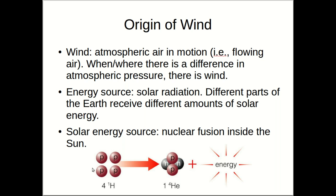You may then ask where solar energy actually comes from. The Sun is also an energy conversion system, which converts nuclear energy into solar radiation. Inside the Sun, four hydrogen nuclei are combined into one helium nucleus. This reaction happens at an extremely large rate, and the total mass of the four hydrogen nuclei combined is slightly larger than the mass of the helium nucleus. The lost mass during this reaction is converted into energy according to Einstein's mass-energy equivalence equation: E = mc², energy equals mass times the speed of light squared.